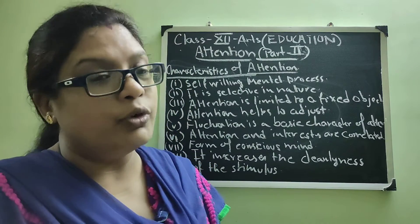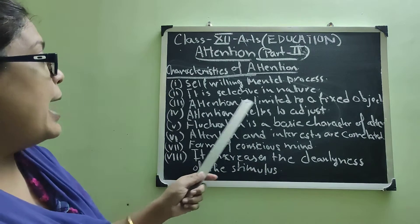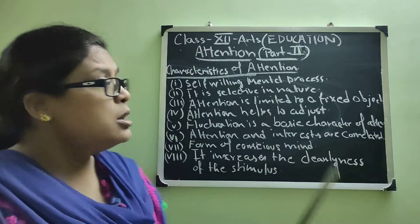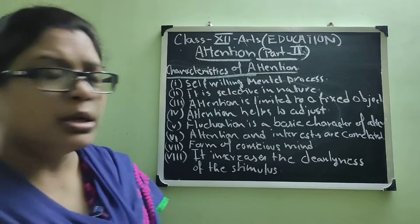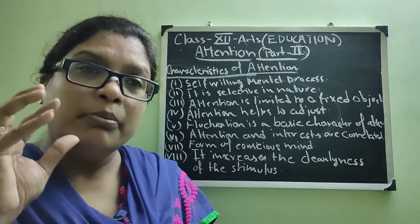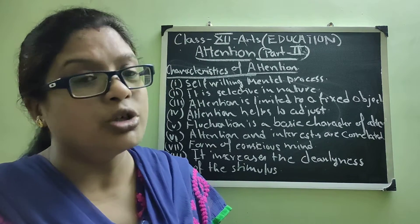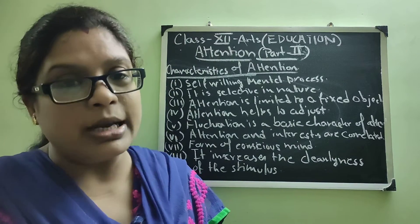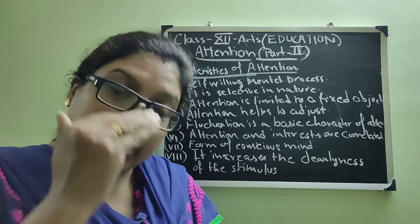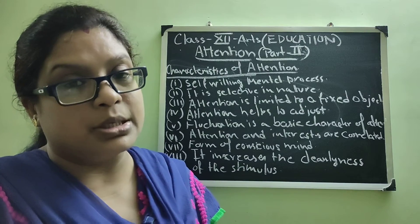If you have any confusion, please inbox and let me know. Third point: attention is limited to a fixed object. Attention means when you are continuously paying your mind to a particular object — distraction or fluctuation of attention is not attention.